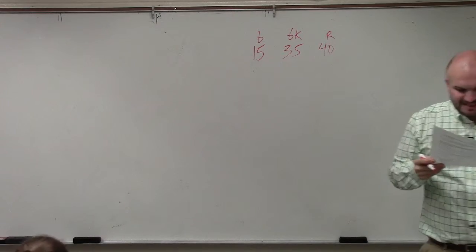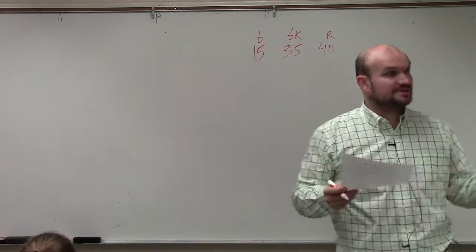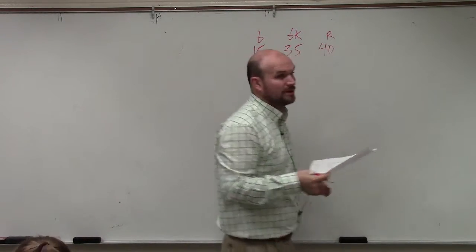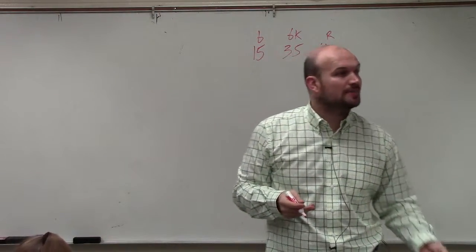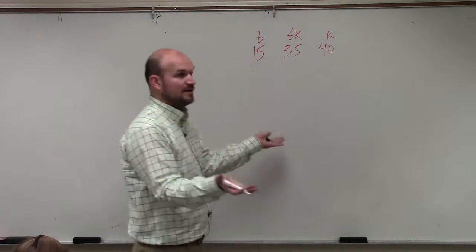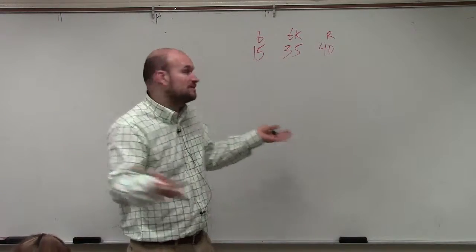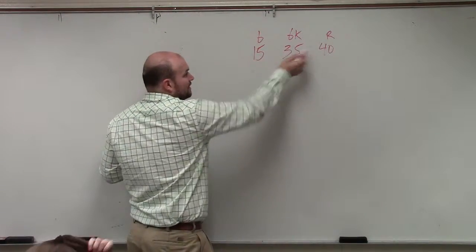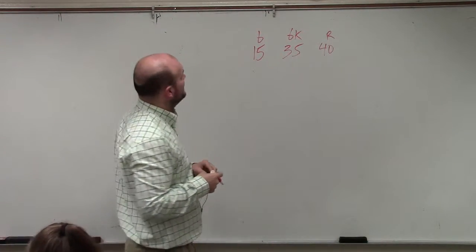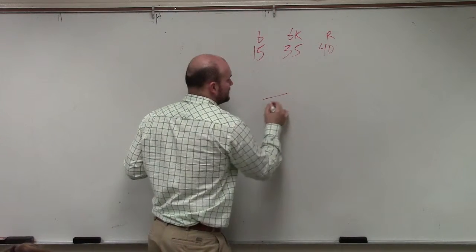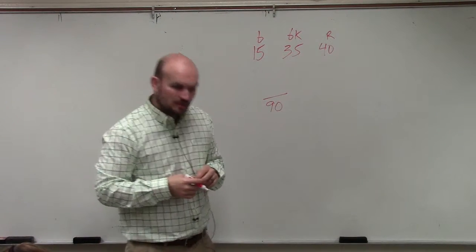You pick a pen at random, find each theoretical probability. So we're just going to pick one pen, and we just need to find the theoretical probability. We need to be able to figure out what is the total number of outcomes. If we're going to pick one, what are all the possibilities of the colors we could pick? It could be blue, black, or red. So therefore we have a total of 90. Everybody agree with me?